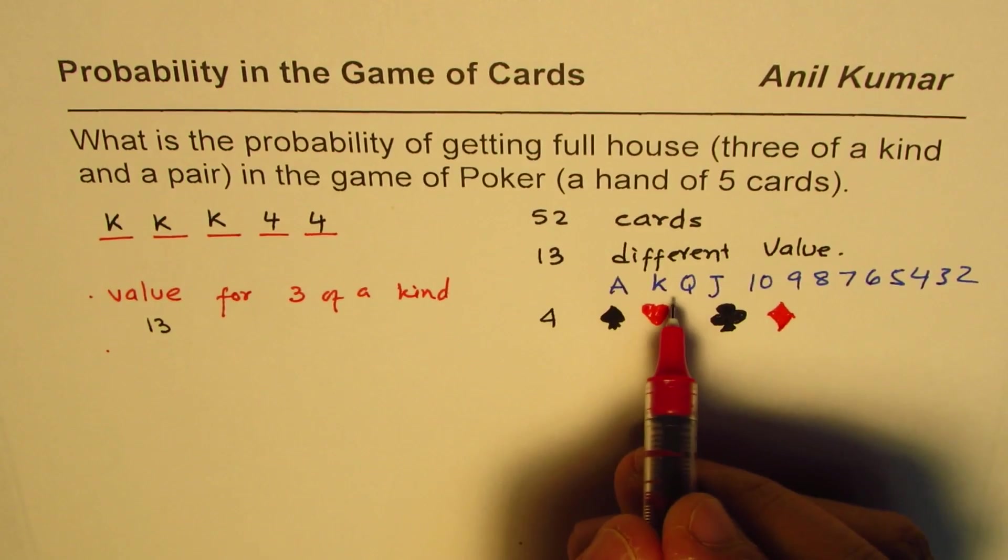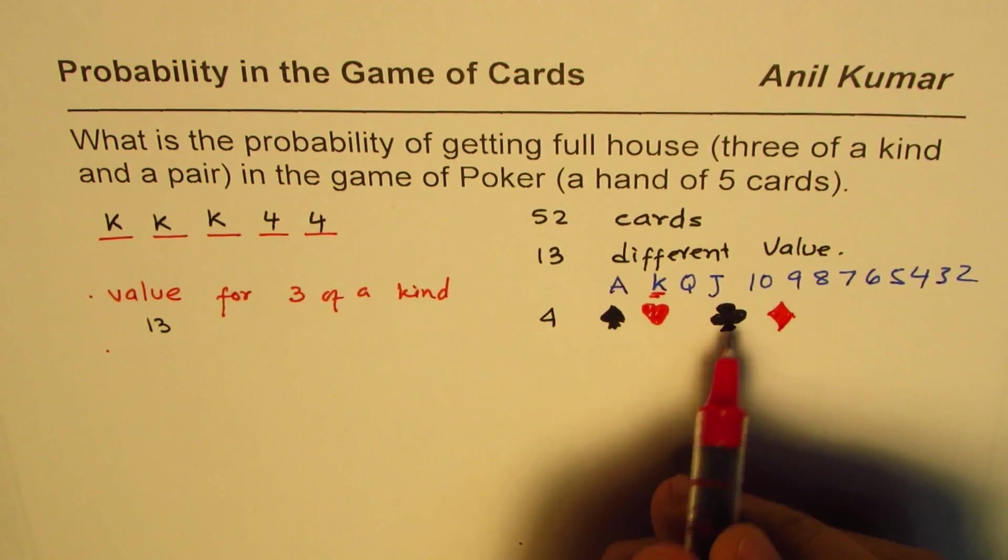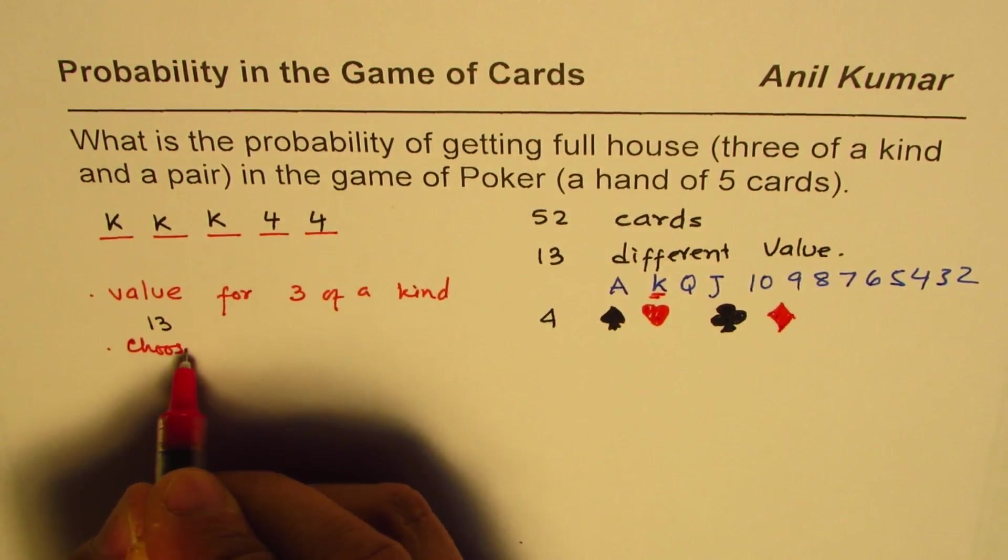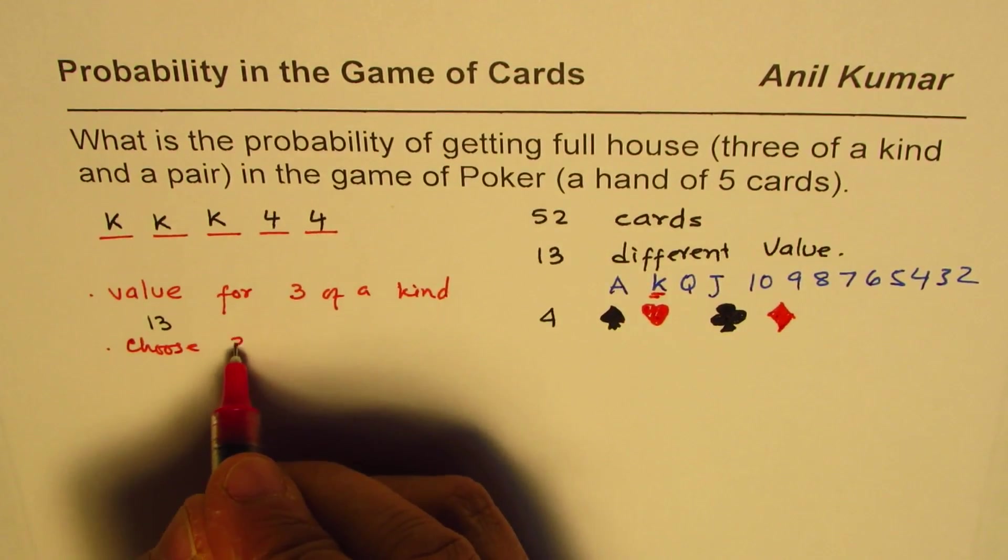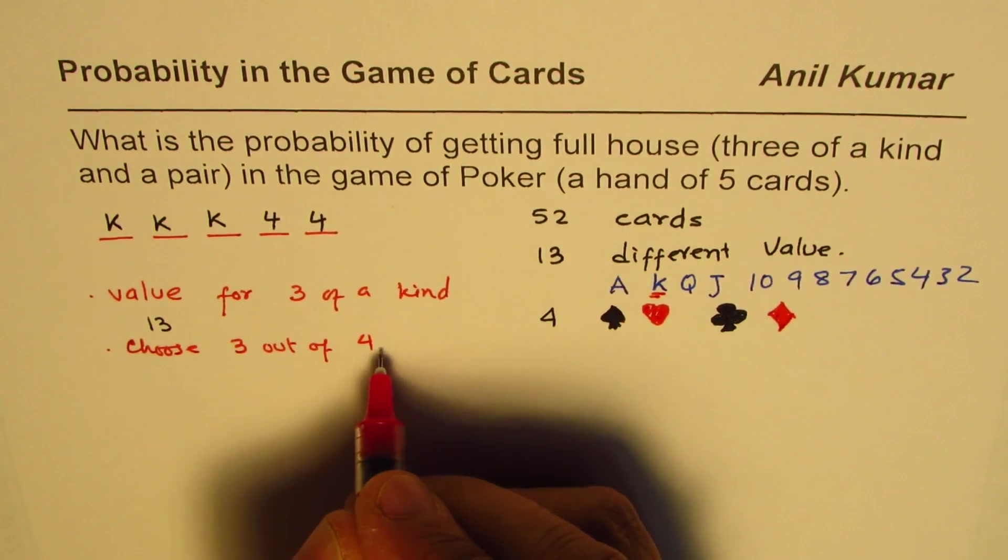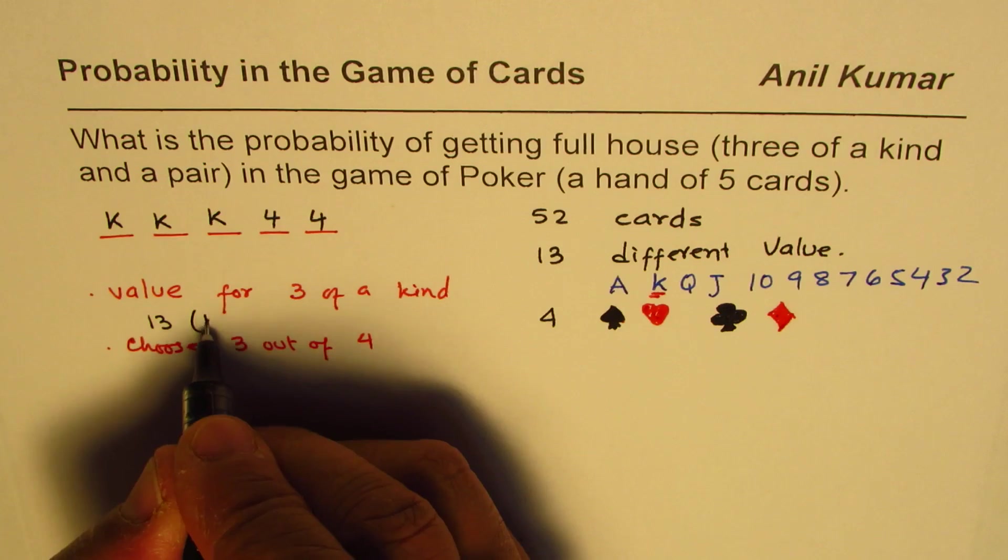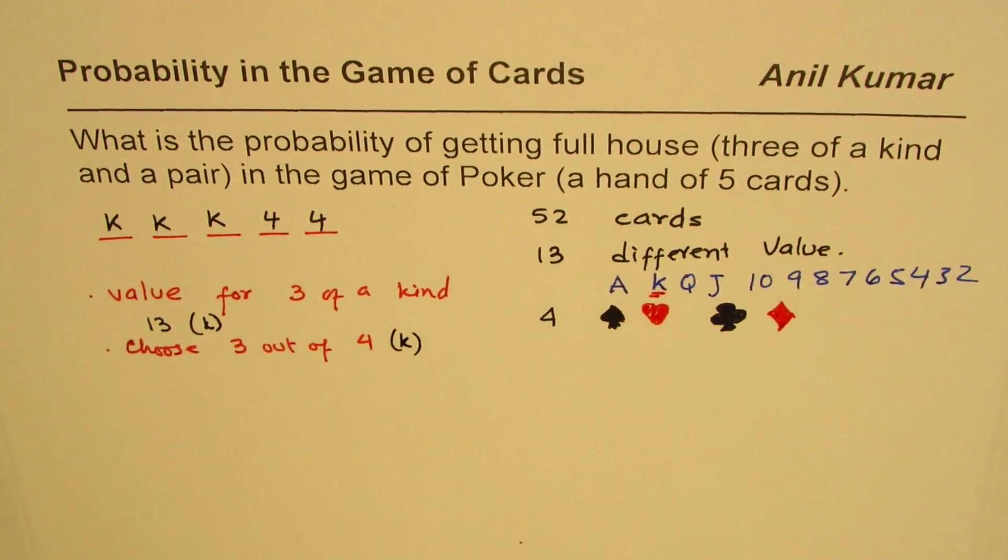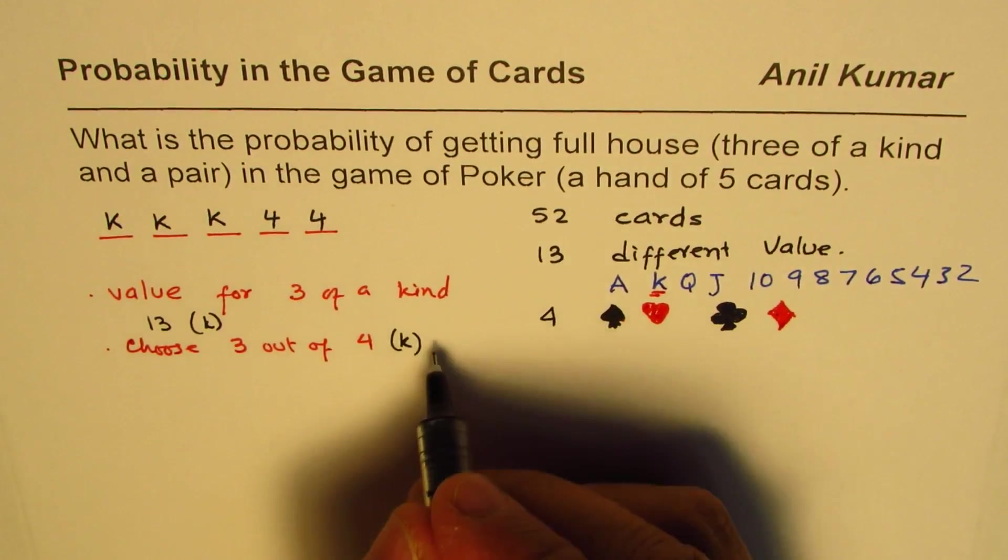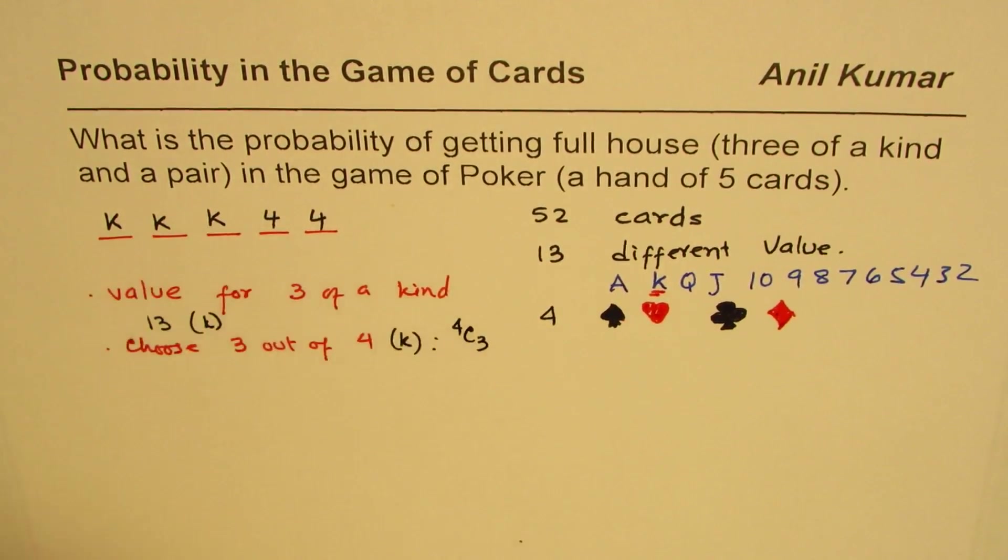So if we select one of these, any one of these, let's say we selected king, then we have a choice to make from four kings, right? So we have to choose three out of four, right, of that value. In this case what we did was we have selected king here, so we are selecting three out of four kings. So that gives us the choice as from four you have to choose three, right? So that is the first one.